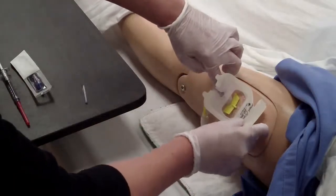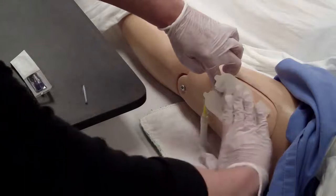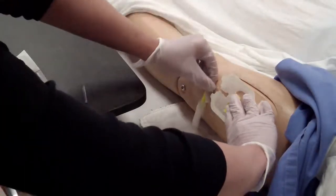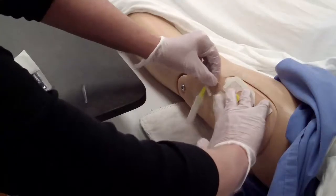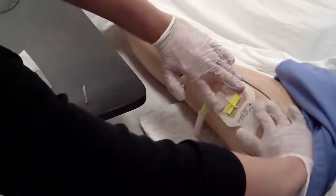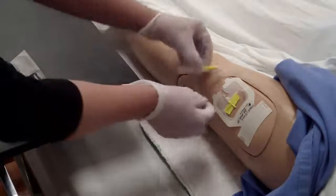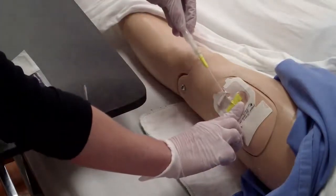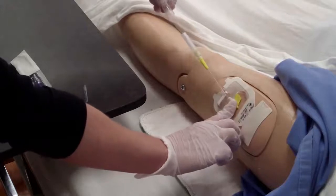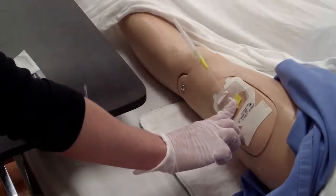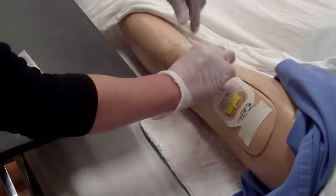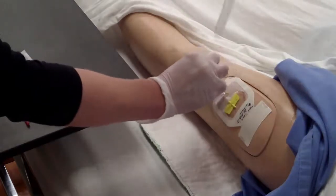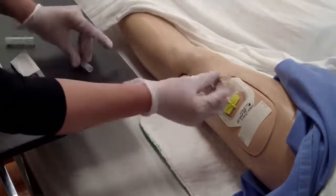Ensure that you can see the insertion site through the window of the Tegaderm. You can now remove the guide wire. Apply some gentle pressure at the insertion site and gently and slowly pull the guide wire out of the butterfly. The needle ends up in the safety barrel.